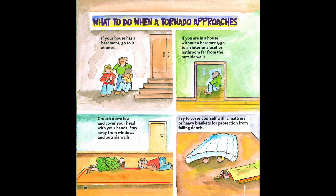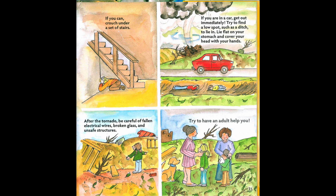What to do when a tornado approaches: If your house has a basement, go to it at once. If you are in a house without a basement, go to an interior closet or bathroom far from the outside walls. Crouch down low and cover your head with your hands. Stay away from windows and outside walls. Try to cover yourself with a mattress or heavy blankets for protection from falling debris. If you can, crouch under a set of stairs. If you are in a car, get out immediately. Try to find a low spot such as a ditch to lie in. Lie flat on your stomach and cover your head with your hands. After the tornado, be careful of fallen electrical wires, broken glass, and unsafe structures. Try to have an adult help you.